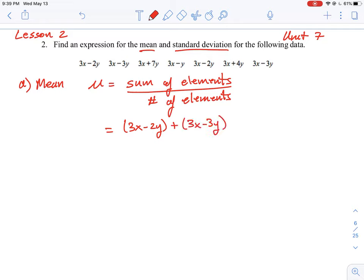So it's a little bit long, but we have to go 3x - 2y + 3x - 3y, and so on for each element until we get to the very end, which is going to be 3x - 3y. We will have to go through each one of those and then divide it by the number of elements, which in this case is seven.